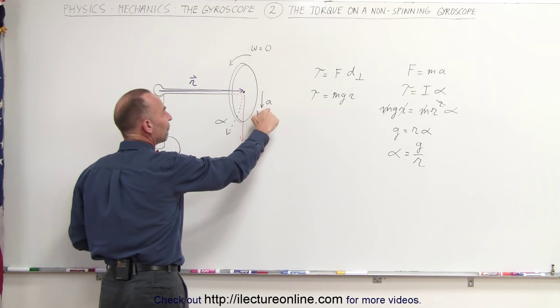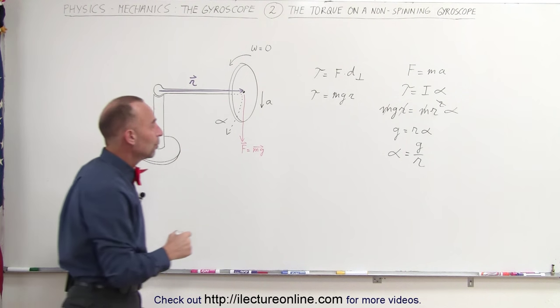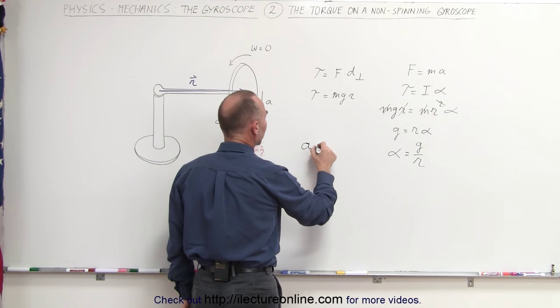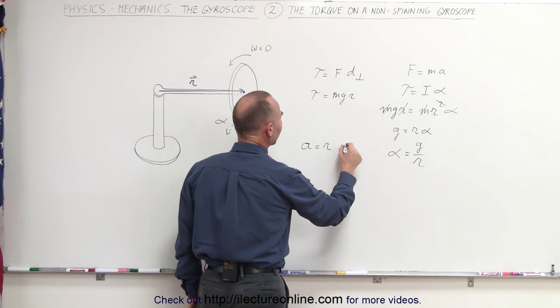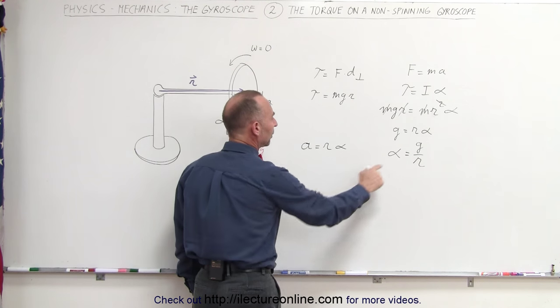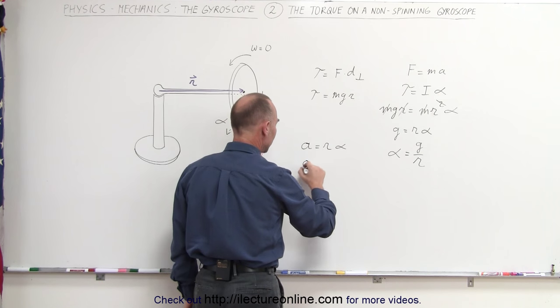So if you want to find out how fast initially the gyroscope will be accelerating, we could then say that the relationship between the tangential acceleration is equal to the radius arm, r, times the angular acceleration.